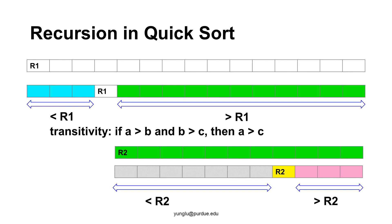Let me explain the concept of QuickSort. This algorithm first selects a value in the array as a reference — let's call it R1, also known as the pivot. The algorithm then puts all values smaller than R1 on one side of the array, and all values greater than R1 on the other side. Because of transitivity, there is no need to compare these two sides. The QuickSort algorithm divides the array into three parts: the part smaller than R1, R1 itself, and the part greater than R1.